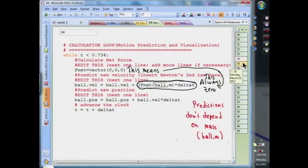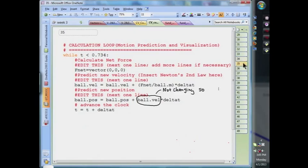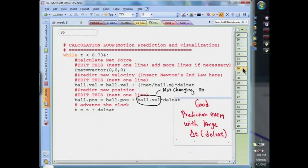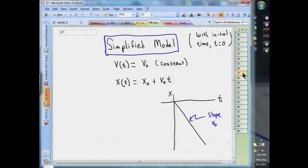Moreover, because this leads to constant velocity, then our position predictions would still be good, in this particular case, regardless of how large delta t is. This means we could write a simplified model of the motion, with the beginning time at t equals zero, in just this way. Where we recognize the function x of t as the equation of a line, with slope v-naught, the x-component of velocity.